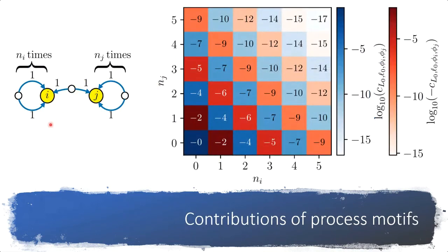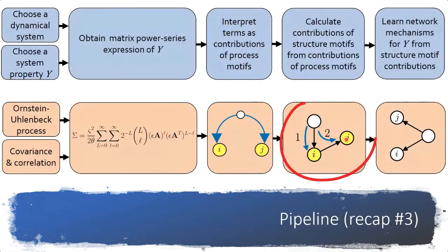For correlation process motifs, there are many more parameters so we can't explore all combinations. In a simple example with parameters set to one, varying only the number of variance process motifs at node i (ni) and node j (nj), we see both positive and negative contributions to correlation — meaning some microprocesses on networks increase correlation between nodes while others decrease it.